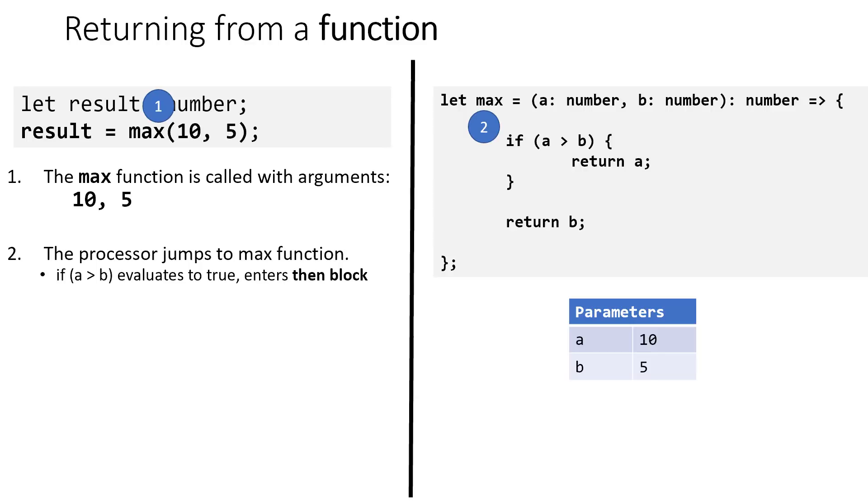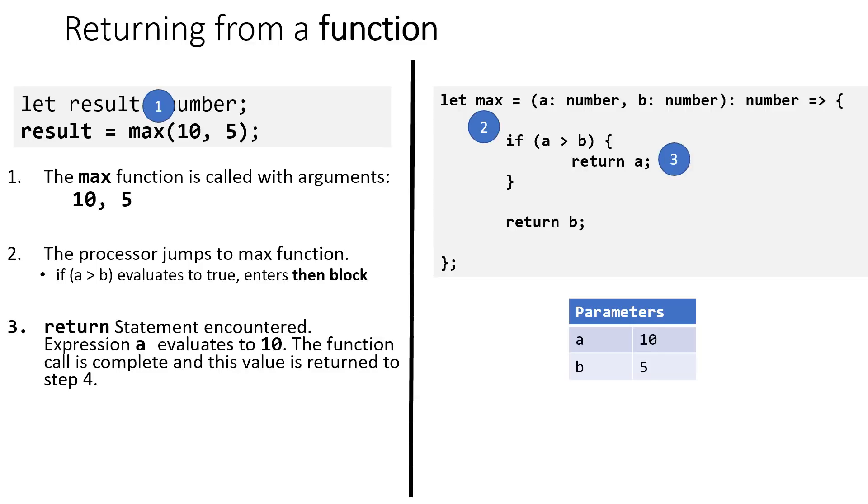We see that we reach a return statement. Given that previous rule that we just learned, we're going to stop everything this function was otherwise doing and return a back to the caller. So what happens is, the value of a, which is 10, is going to be returned back to the result, and result is going to have a value of 10.